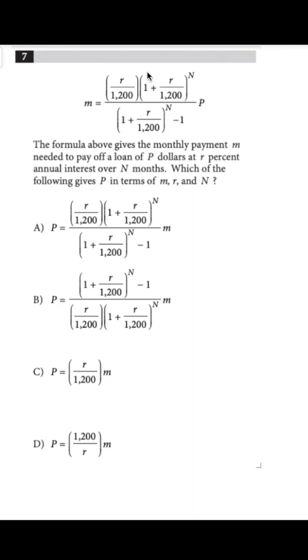And P is just being multiplied by this big, ugly fraction. So all I need to do to cancel out this multiplication of a fraction is multiply by the reciprocal of the fraction.